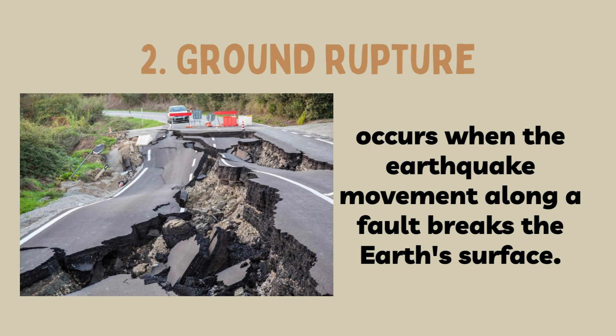Ground rupture occurs when the earthquake movement along a fault breaks the Earth's surface. During the shaking, stresses are produced in the ground, leading to ground rupture. Structures like dams, bridges, tunnels, pipelines, roads, and others are at risk of ground rupture.